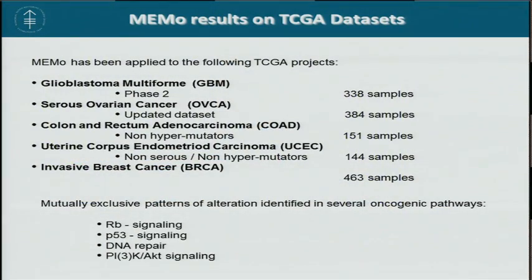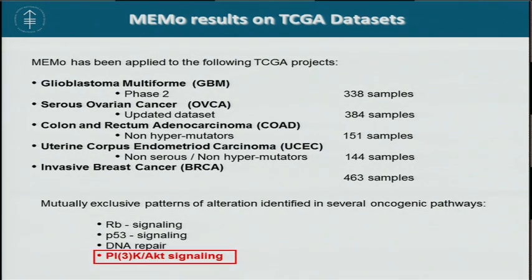In each of these cancers, MIMO identified mutually exclusive patterns of alteration affecting several oncogenic pathways, including RB signaling, PI3K signaling, DNA repair, and PI3K-AKT signaling. Today I will focus specifically on the PI3K-AKT pathway, including RTKs and RAS.